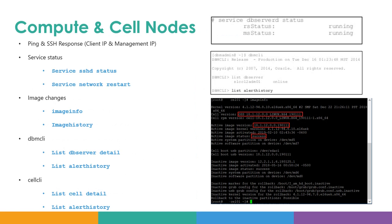Next we'll move on to the compute and cell nodes, which are the storage servers. The first thing to check is the ping and SSH response of the compute and cell nodes from other systems to verify if the system is up and running. You can check services like the SSHD service and network. You can also check system changes like patching through the image info and image history commands, which report the current image version and Exadata version. On the database server, you have dbmcli — a command line interface — where you can log in and type 'list dbserver detail' which gives various metrics about the DB server including the battery backup unit. You can also type 'list alert history' which gives you the recent alerts reported on the database server.